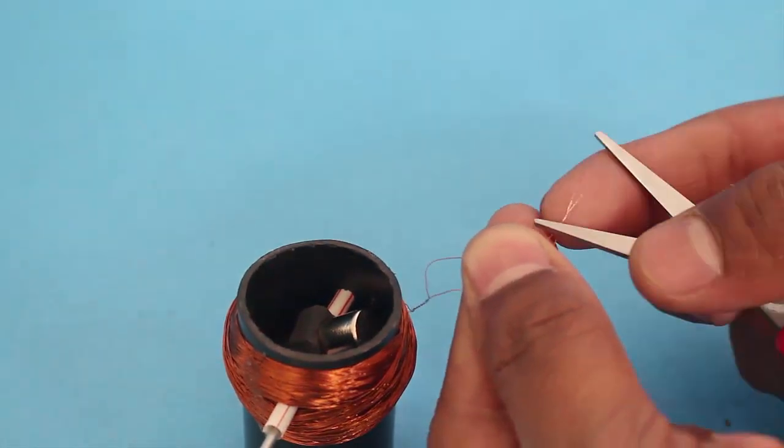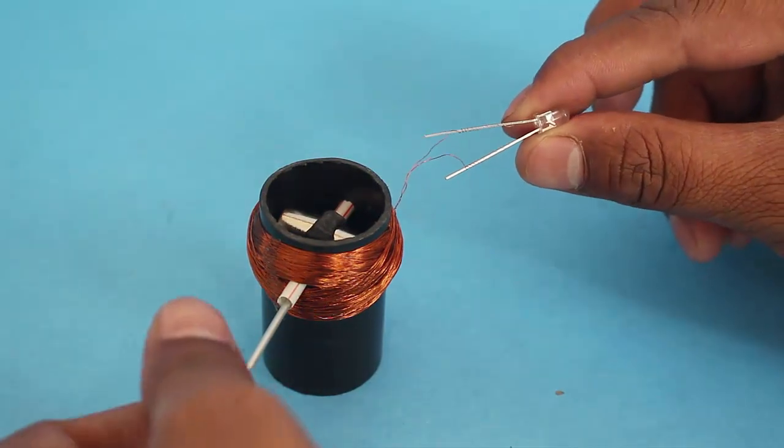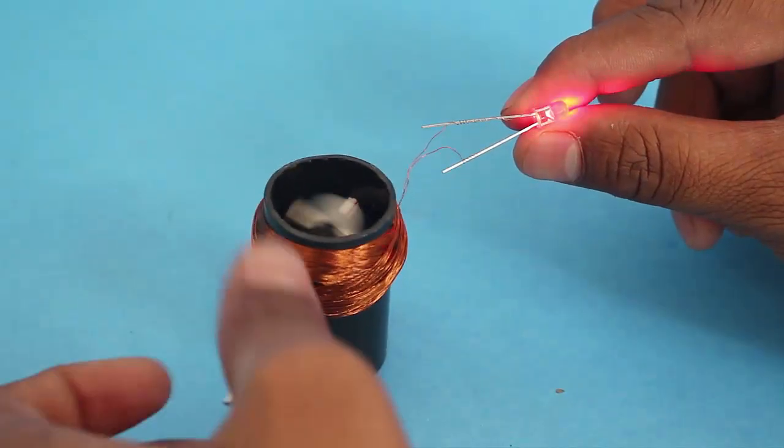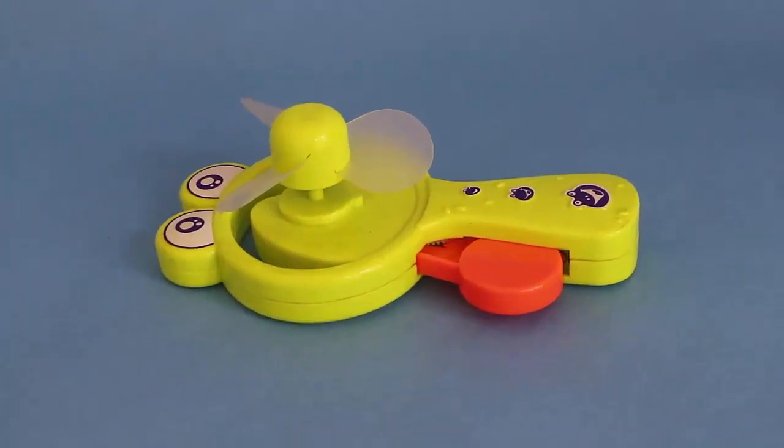Finally, scrape both ends of the coil to expose the copper and attach them to an LED. On spinning the magnets, the LED will light up.